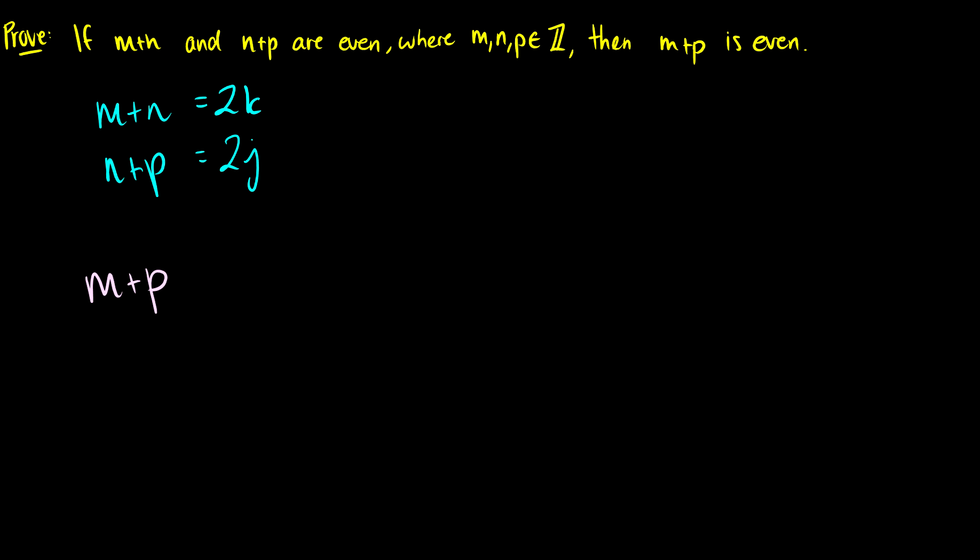So we have m plus n, we have n plus p. So m plus p is going to be equivalent to, we're going to add an n for m, and then we'll subtract it later. So this is still equal to m here. And then we're going to add p and add an n, and then we're going to subtract n again. So this m plus p, m plus n, plus p plus n, minus n, minus n, these are equivalent statements.